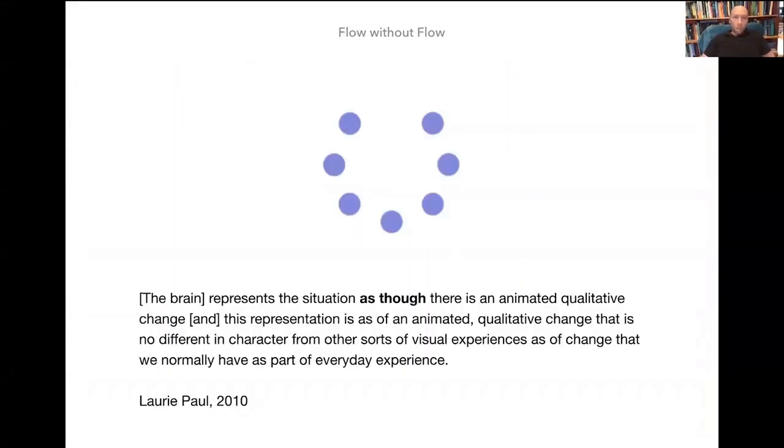Probably the most popular illusion used by philosophers is this example of the phi phenomenon, where your brain is constructing a notion of a flowing animated movement of these circles, even though there's nothing actually moving. It's just these blue squares being removed and reinserted. It's completely static.